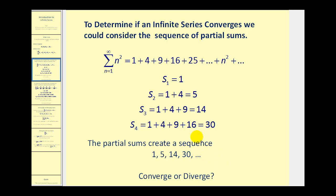The sequence is generated by the partial sums of the infinite series. It's probably pretty easy to see from this sequence that it appears to increase without bound, and therefore this infinite series diverges.